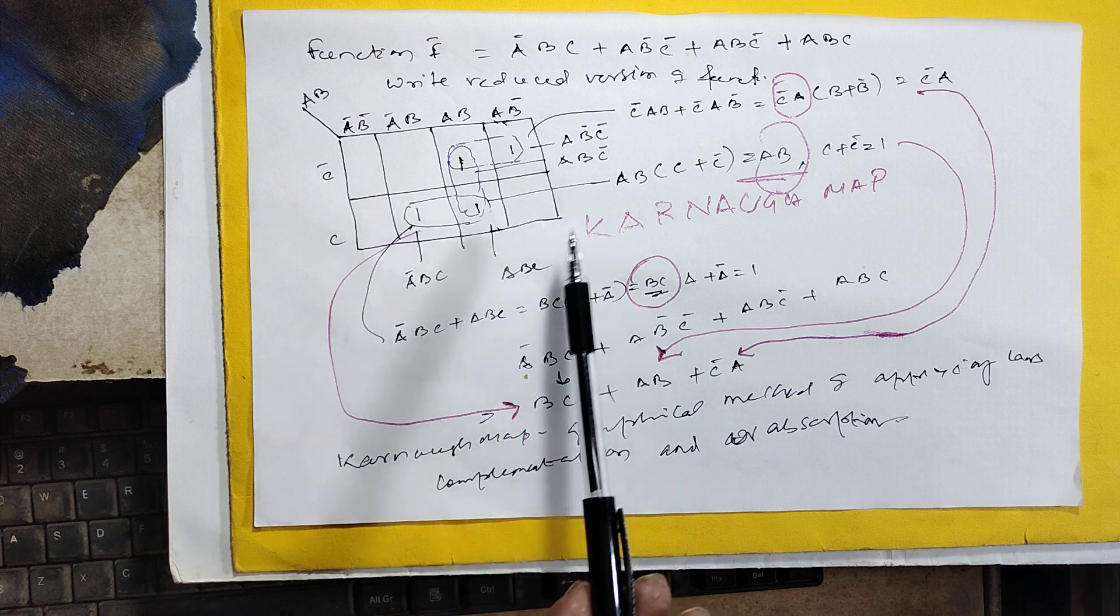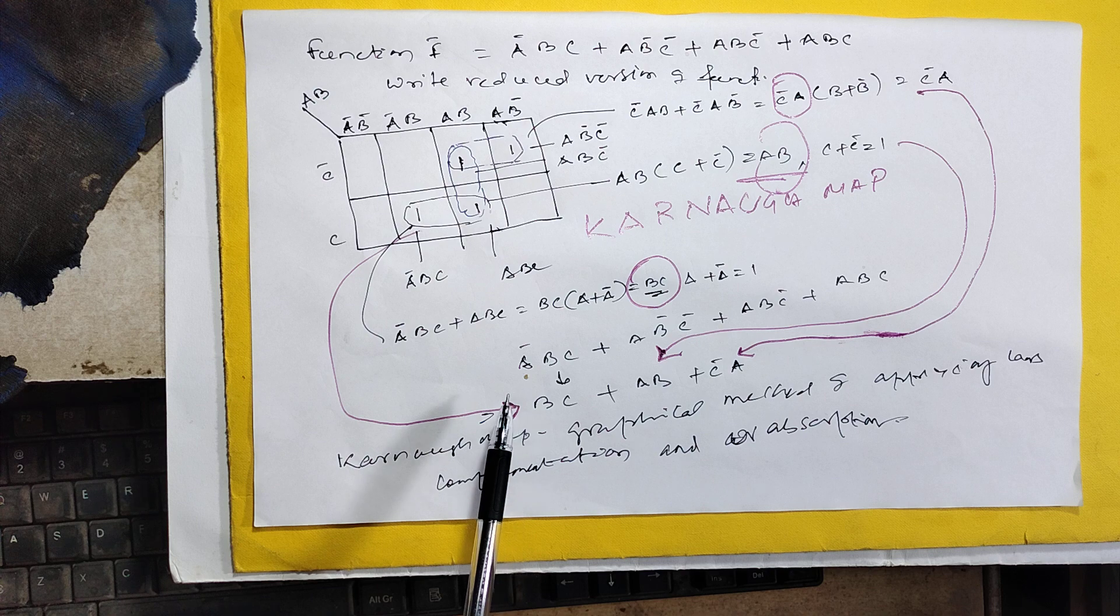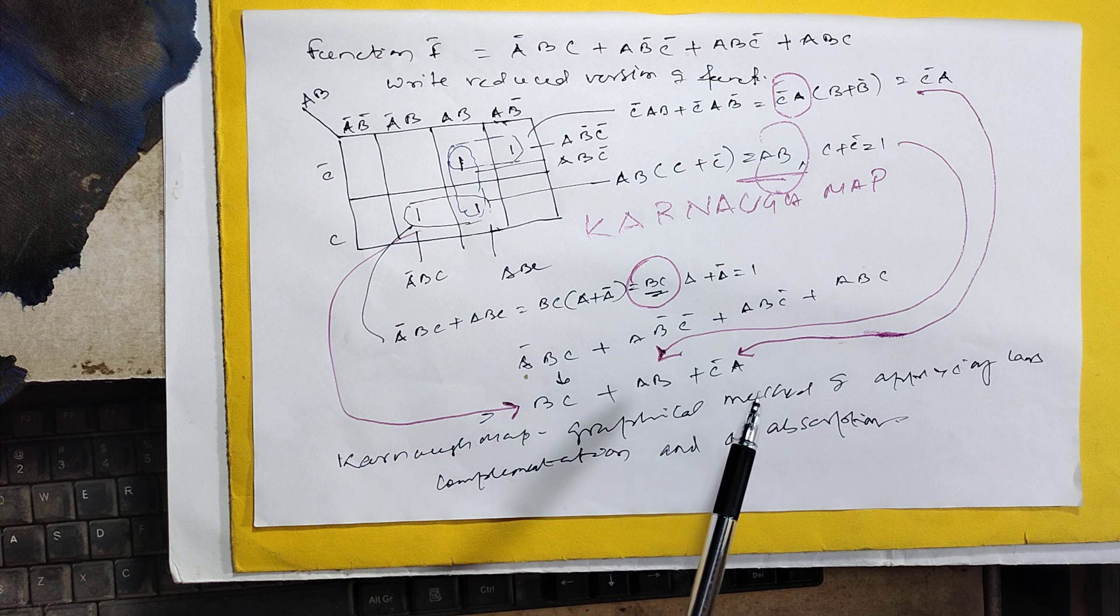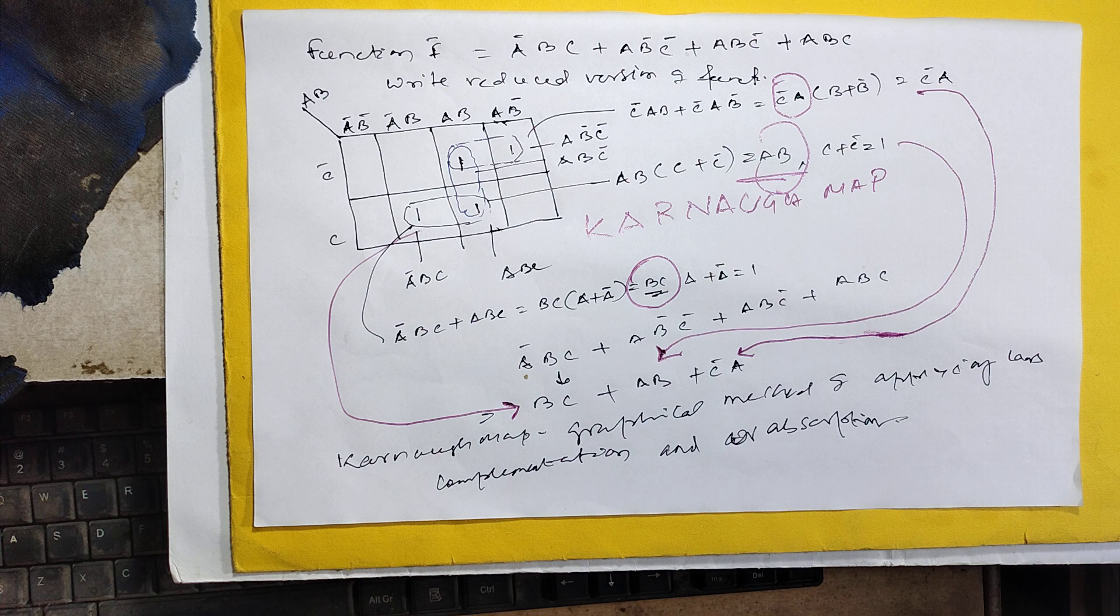And this is bc, so you have to add. This is addition. bc plus ab plus c'a. Karnaugh map is a graphical method of applying laws of computation and observation.